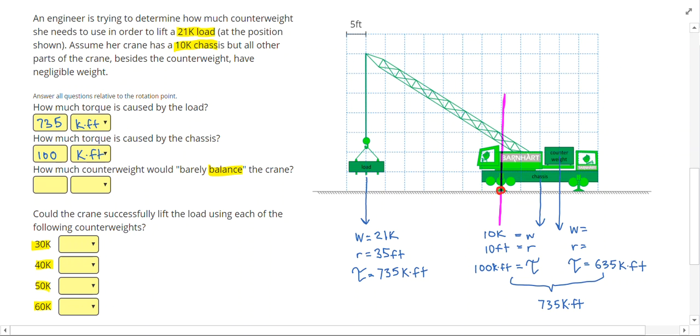If I count my radius here, 5, 10, 15 feet to the center of the counterweight. And then to get my weight, I can do the torque divided by the radius again. So 635 divided by 15 gives me 42.3 kips as my counterweight.